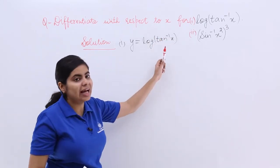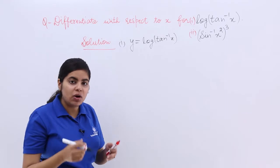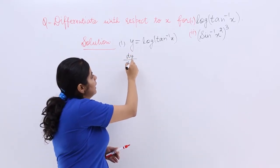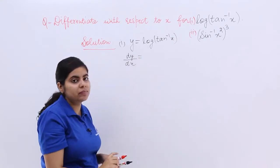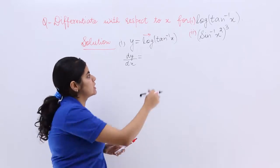It is basically having an inverse trigonometric function as well as log. Now if I want to differentiate with respect to x, it will be dy by dx which is equal to what? You see here is log. What is the differentiation of log x? It is 1 upon x.